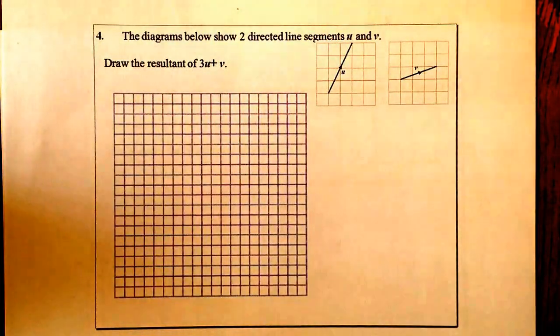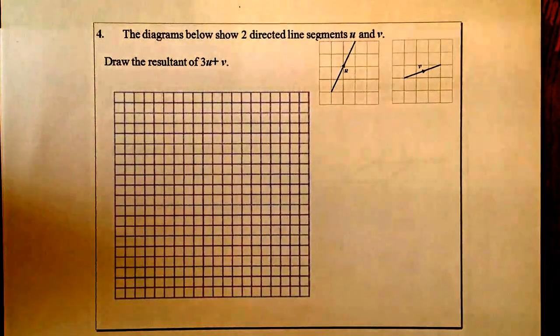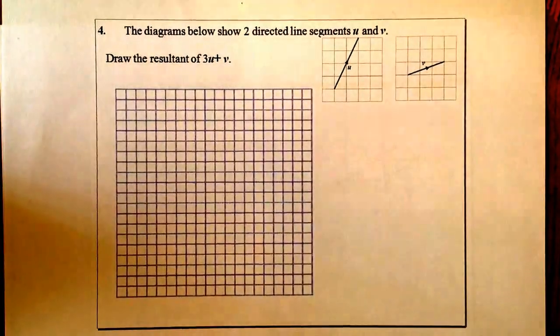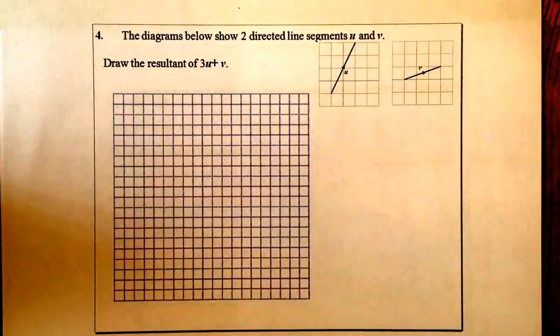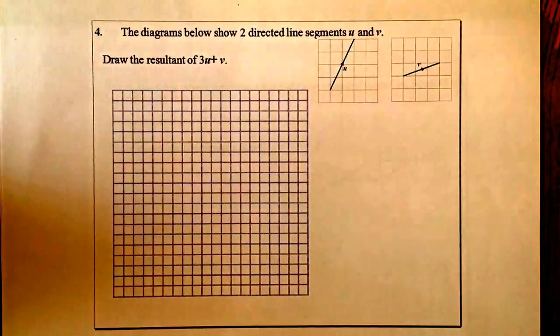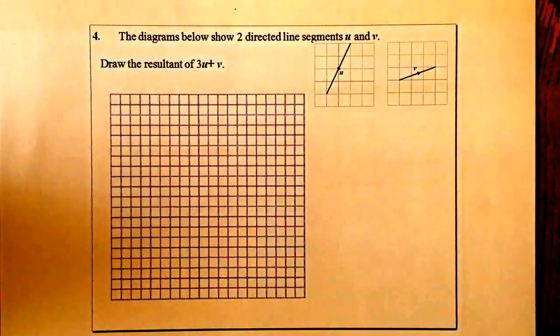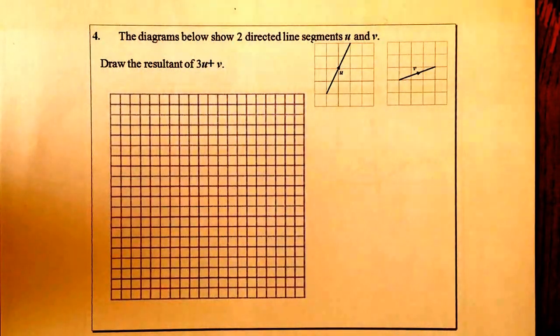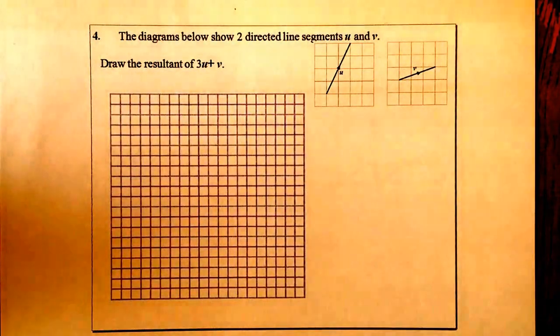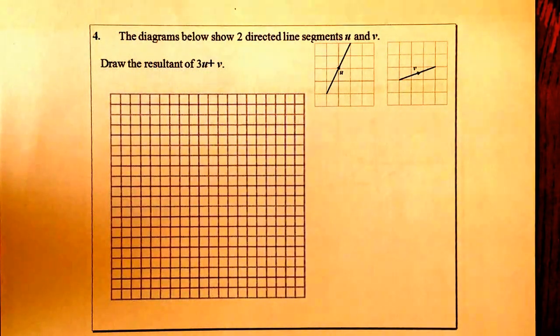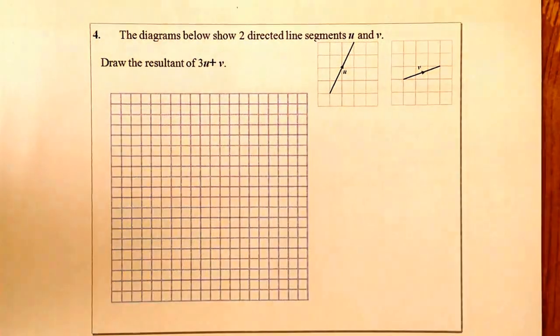This is National 5. It's Applications Unit Assessment. We're looking at Standard 1.2, which is Applying Geometric Skills to Vectors. What I'm going to be using is the Pegasus Practice Paper. And we've got four questions to do here, questions 4, 5, 6 and 7. And I'll show you the marks for these ones here as we go along. Right then, so first question.